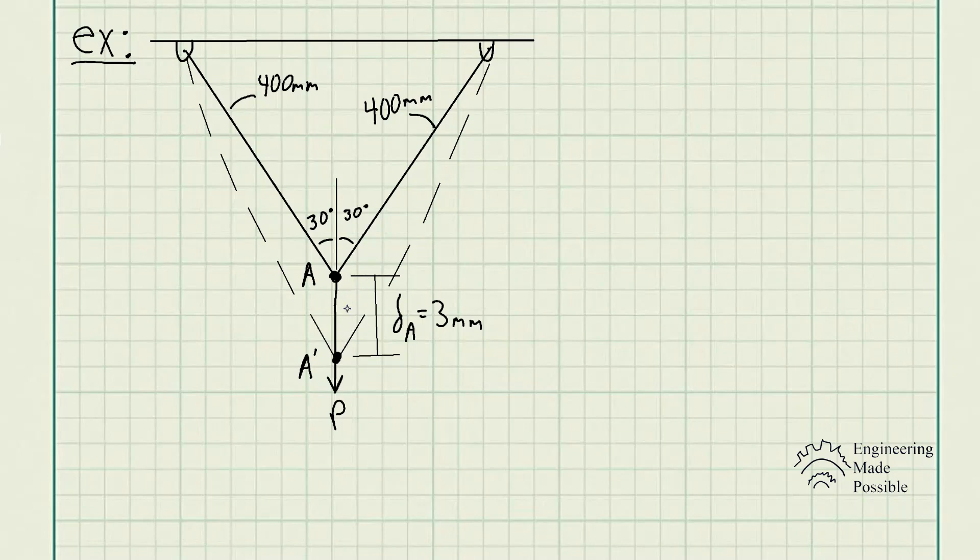We have a force pulling it down. The original location of these two wires was point A, but with this force it deformed both wires and now the final position is A prime. The displacement between those two points is 3 millimeters, and we're being asked to solve for the normal strain in each of the wires.